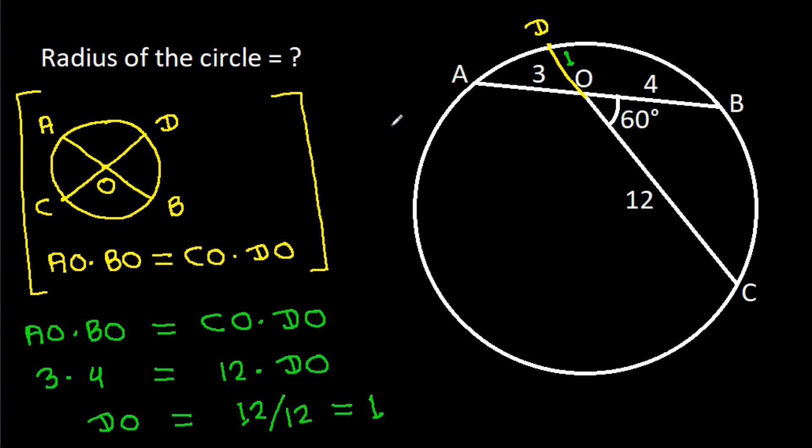So the radius of the circle is 7. Thank you.